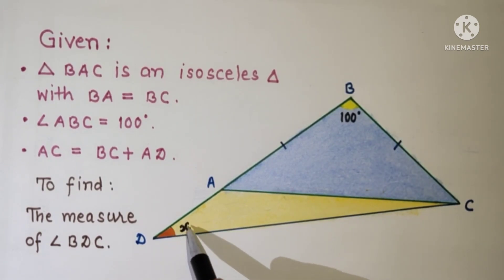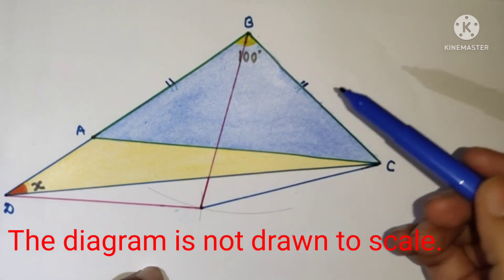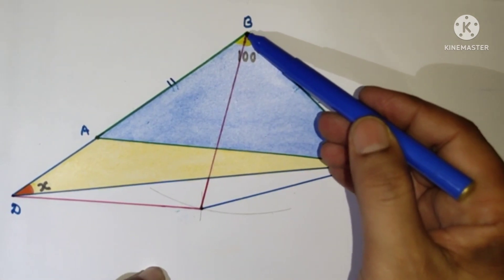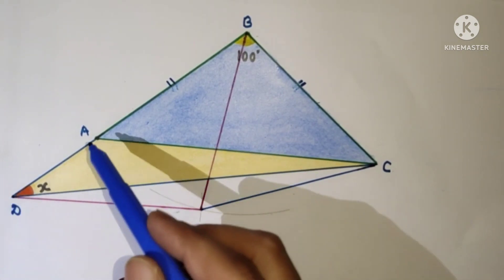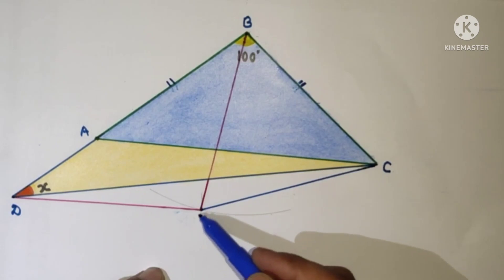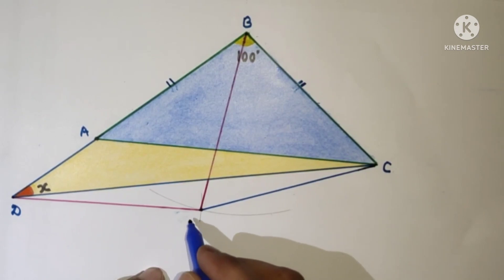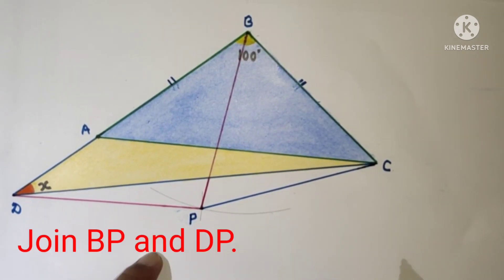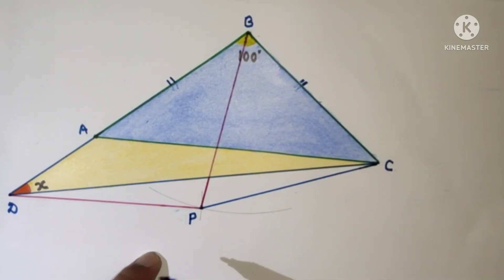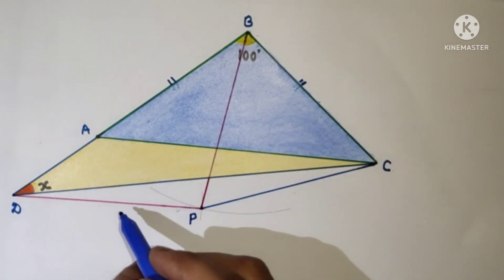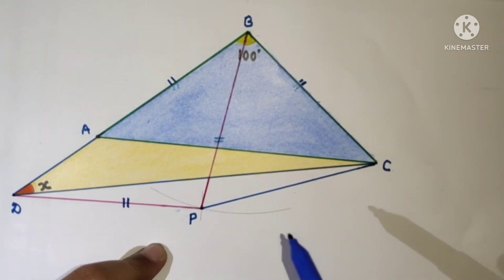We need some constructions. From B, draw an arc of length BA, and from D draw the same arc of length BA. Let these two arcs intersect at point P. Since we have drawn BA equal to BP equal to DP, therefore BA is equal to DP and equal to BP by construction.